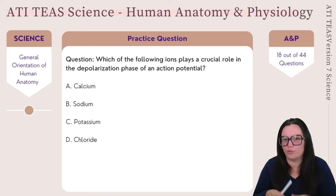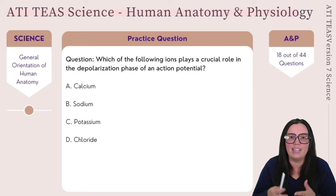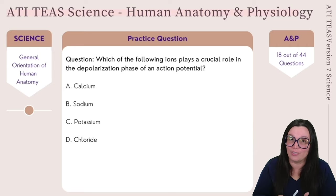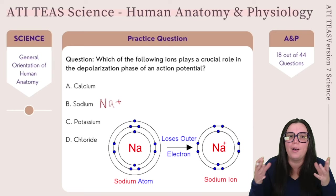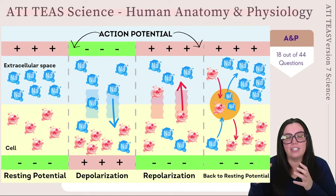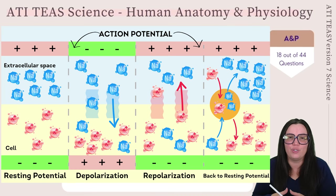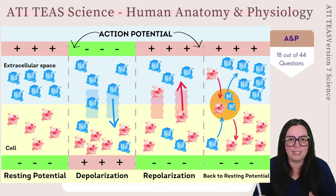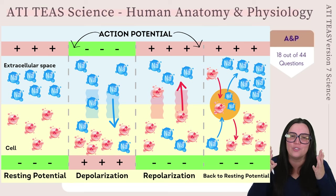The question is really asking: what charged ion is important in making the inside of the neuron more positive during the depolarization phase? The answer is sodium — written as Na+ — which makes the inside more positive. When the action potential begins, specialized channels in the neuron membrane open up, allowing sodium ions to flow into the neuron. These sodium ions carry a positive charge, so their influx causes the inside of the neuron to become more positive. Thus, depolarization of the cell occurs, allowing the action potential to propagate. The correct answer is sodium.